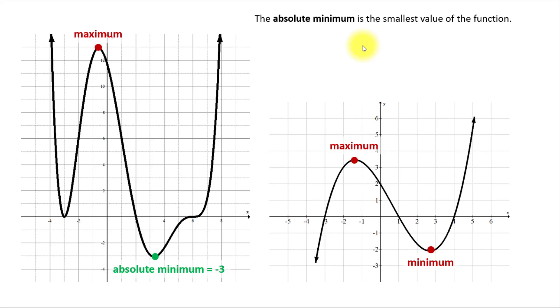The absolute maximum is going to be the largest value of the function. Notice that neither this maximum or this one are the absolute maximum because they're not the largest values of the function.